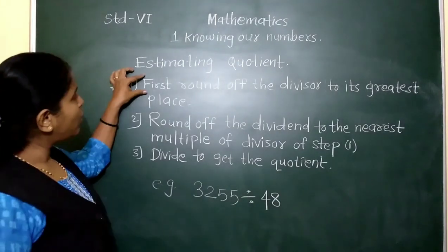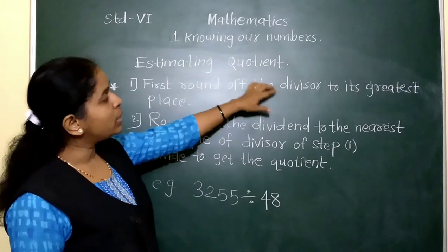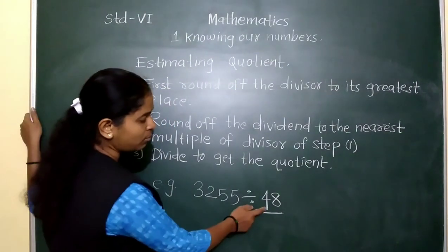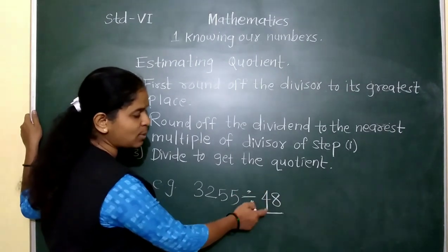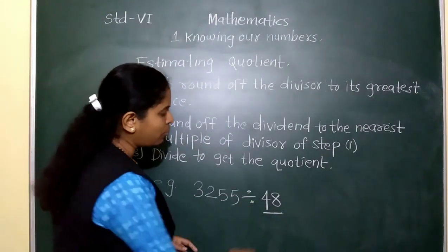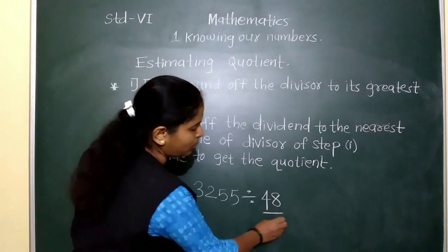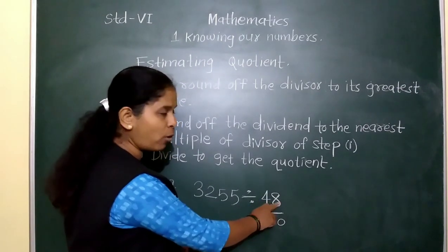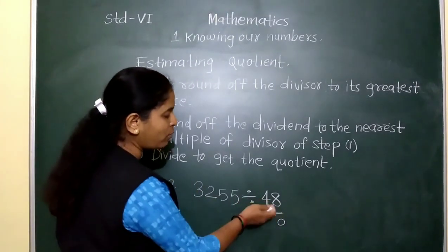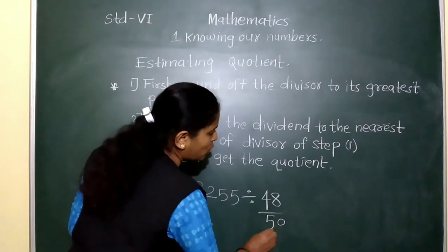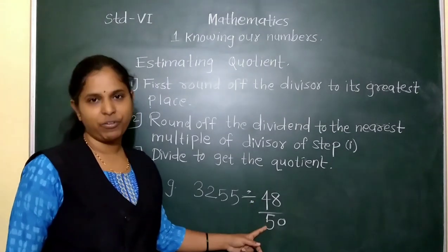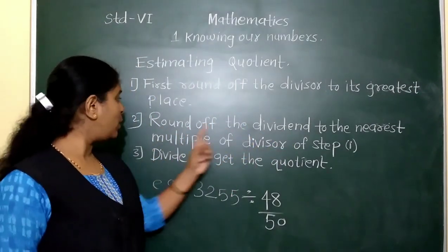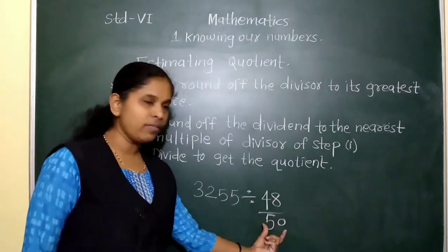First rule: round off the divisor 48 to its greatest place, which is the tens place. After 4 in the tens place, digit 8 is greater than 5, so 4 increases by 1 to become 5. So the round off of 48 is 50.